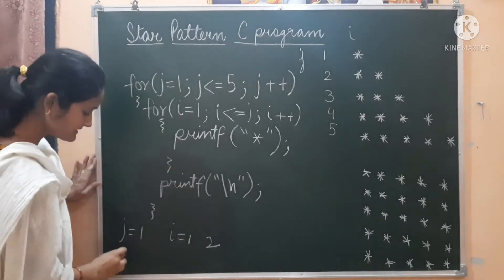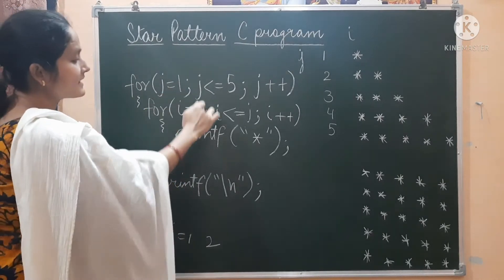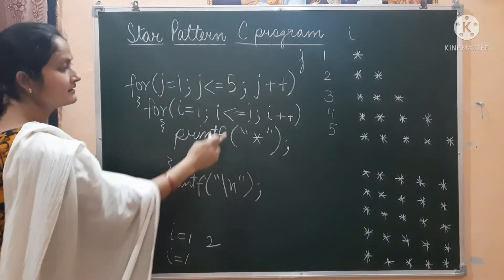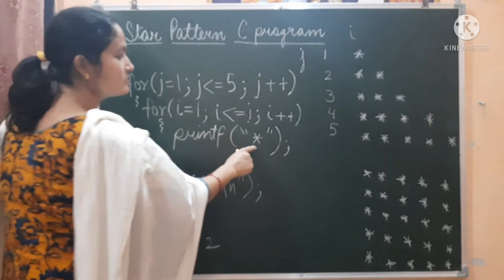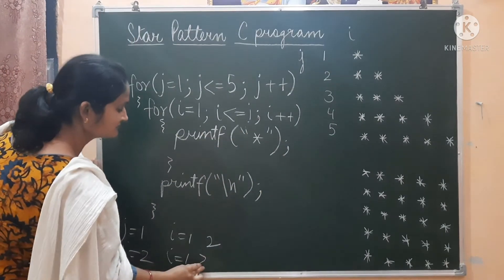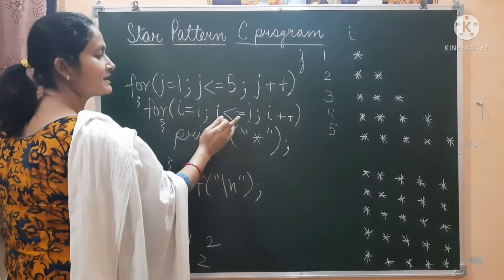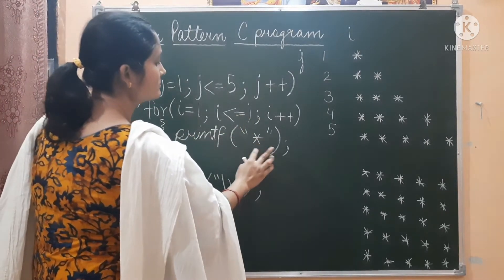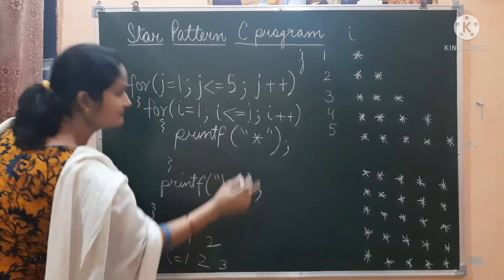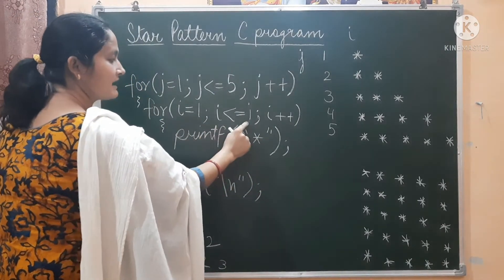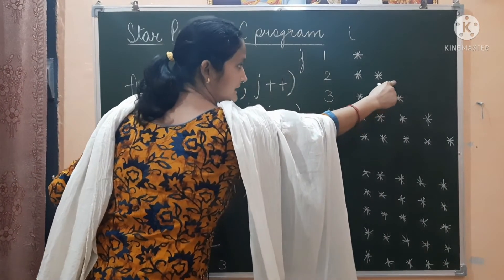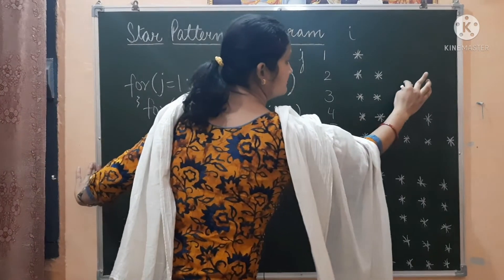Now J is equals to 2. Control will again go here. I will be 1 — condition checked: is 1 less than or equals to 2? Yes, true — so a star will be printed. Now I will be updated to 2 — is 2 less than or equals to 2? Yes, true — so a second star will be printed. Now I will be 3 — is 3 less than or equals to 2? Condition gets false, so no more stars. The newline will execute and your cursor will move down.